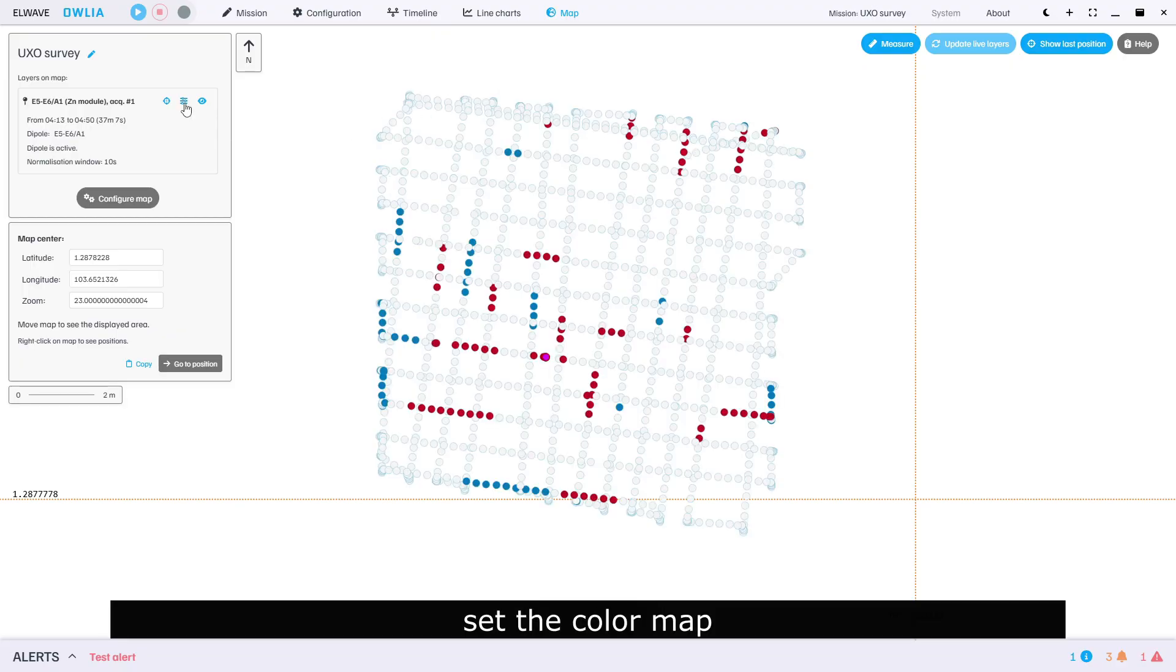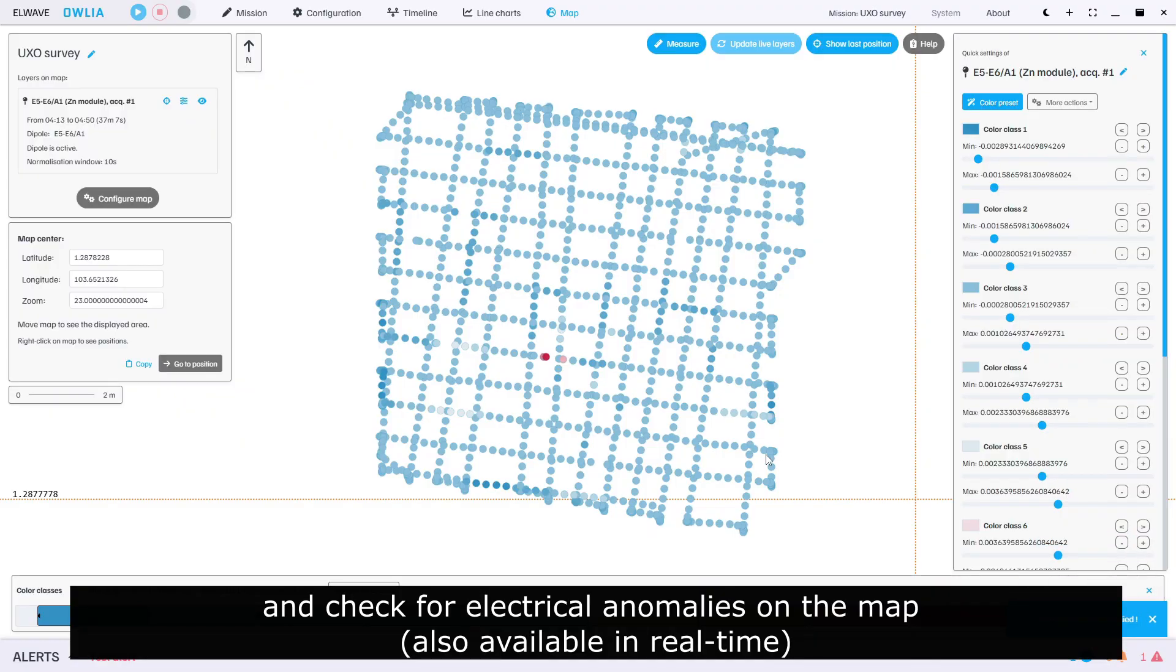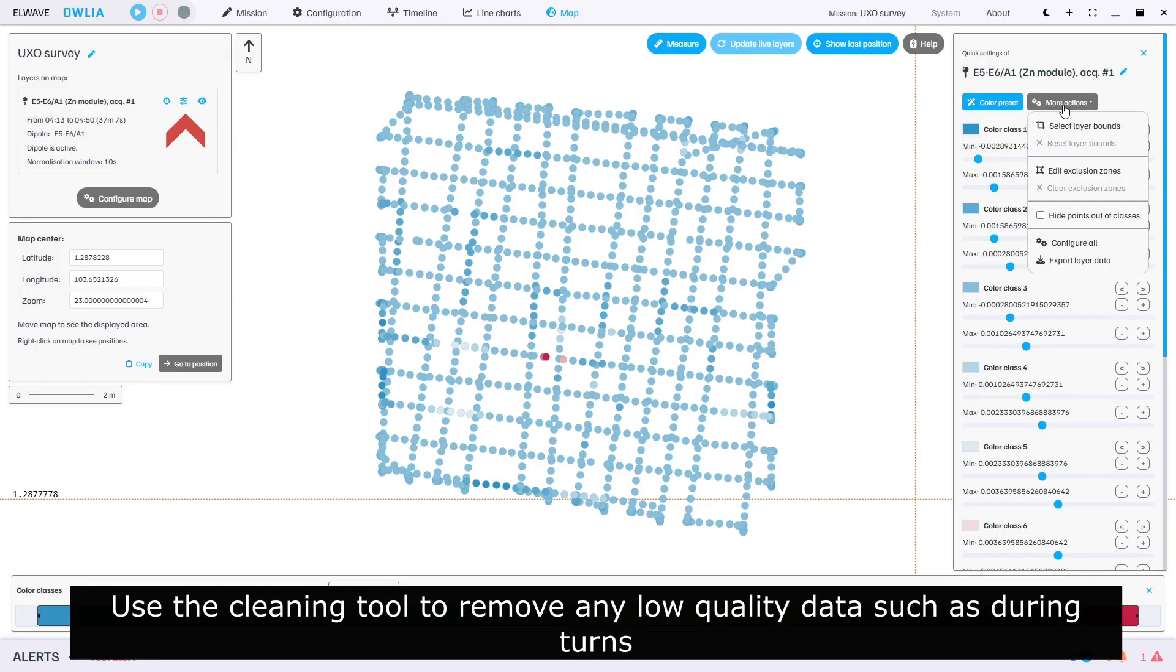Always apply your changes, then go back to the map. Set the color map and check for electrical anomalies. Use the cleaning tool to remove any low quality data such as during turns.